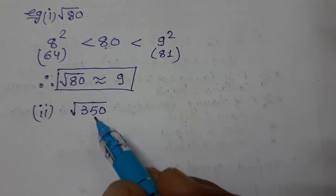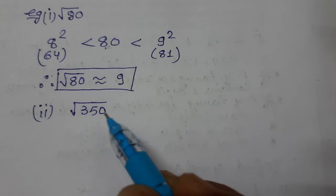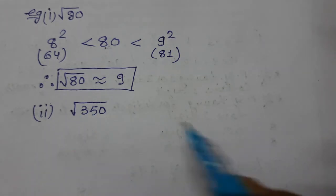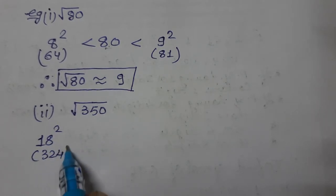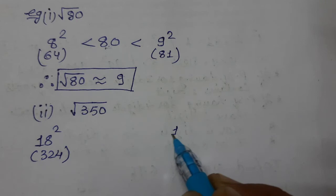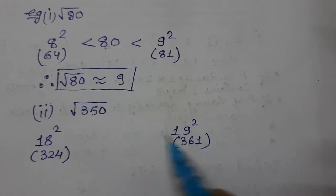18 squared is 324, 19 squared is 361. So we need to know all the squares to be able to do this. So see, 18 squared we know is 324, and 19 squared we know is 361. So 350 lies between these.